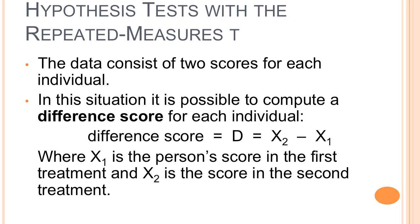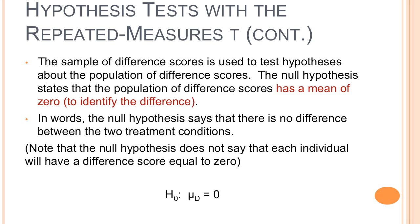The data consists of two scores for each individual, and it's possible to compute a difference score for each individual — a D score. X1 is the first measurement, X2 is the second measurement. You subtract X1 from X2 so that you don't get negative numbers, and you have one difference score for each person. The sample of difference scores is used to test the hypothesis about the population of difference scores. The null hypothesis states that the population of difference scores has a mean of zero — mu sub d equals zero. The alternative hypothesis is that mu sub d does not equal zero.